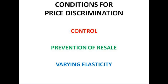For price discrimination to happen there need to be a few conditions. One of them is control — the vendor needs to be able to control what they're offering and who they're selling to, and no competing firm is able to sell at a lower price, because otherwise you'd have to compete rather than try to maximise profit.